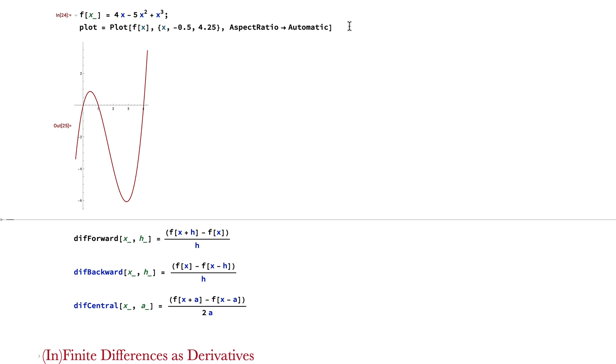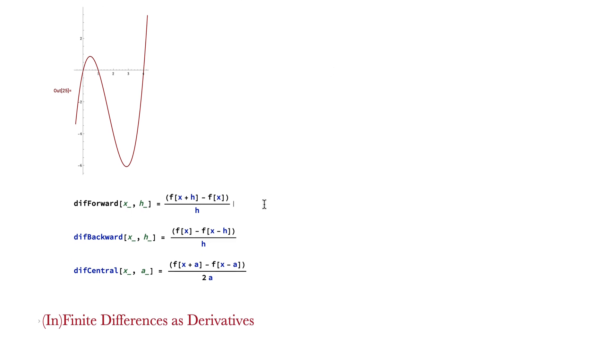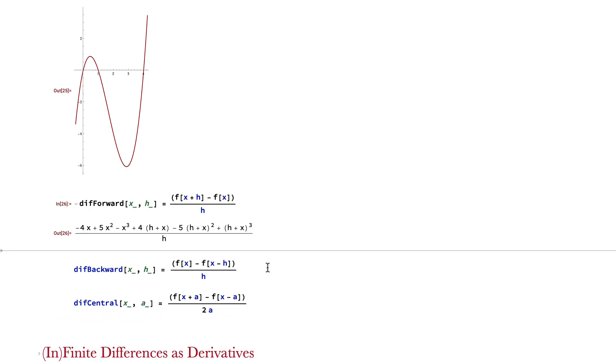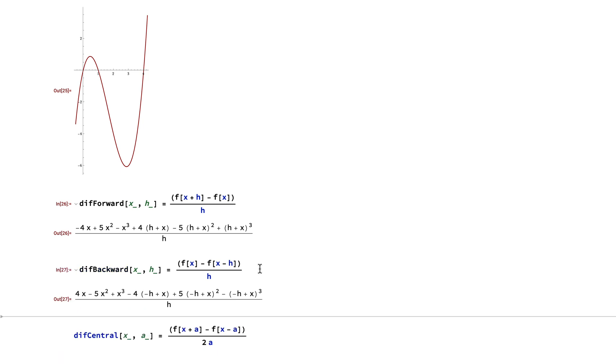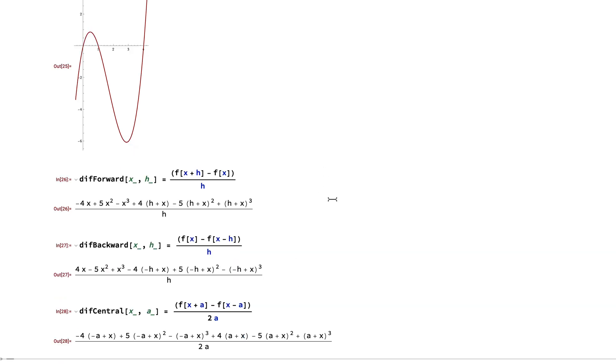Here, we plot out the function to get a better sense of what it looks like. Then, let's examine the different values of these forward, backward, and central definitions. They each look a little bit different, but they serve a similar purpose.